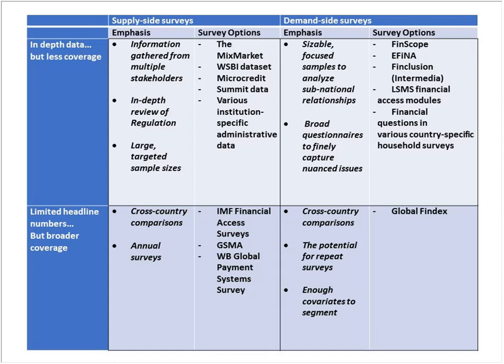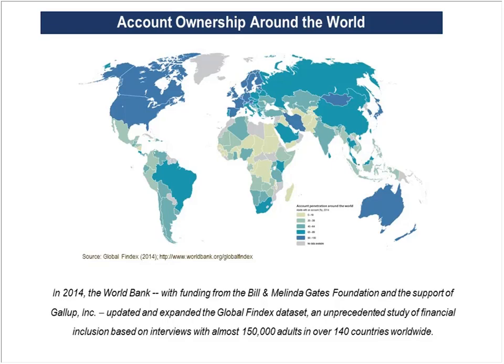Demand-side data is challenging, but we really believe the impact: if you can't measure something, you can't solve it. Here is the map of the Global Findex data 2014. Quite excitingly, we will be publishing the 2017 data in April — we are currently in the field, hoping this map becomes a lot darker as account ownership spreads around the world.